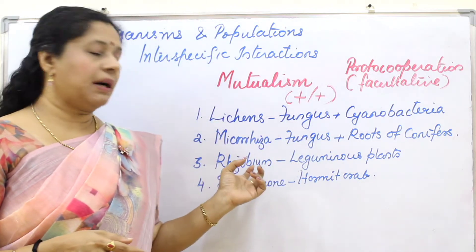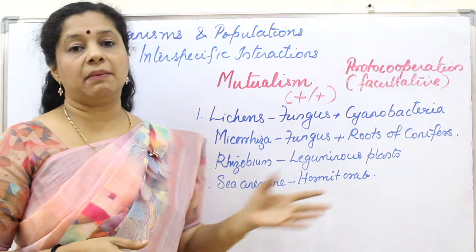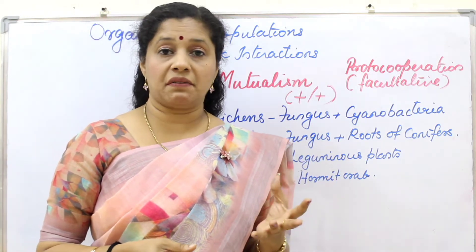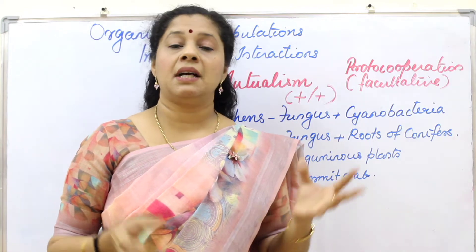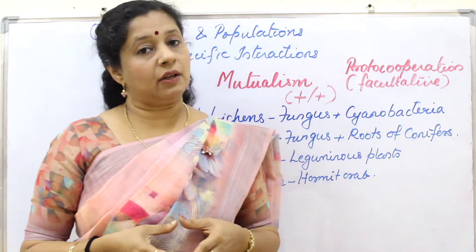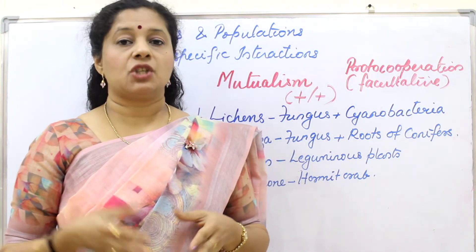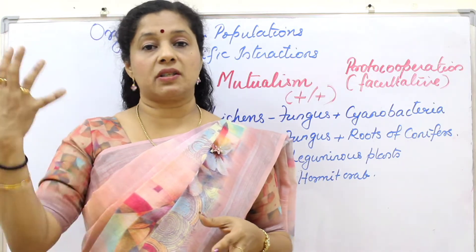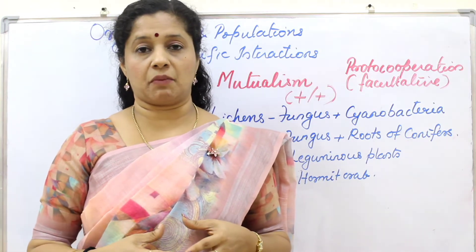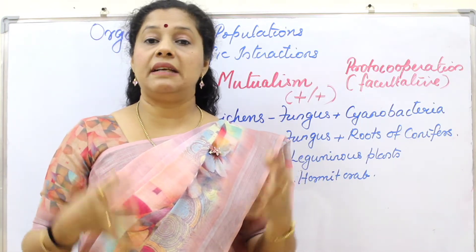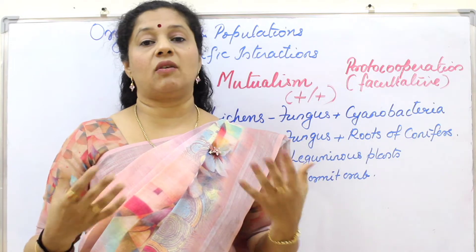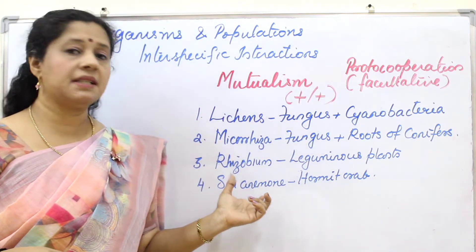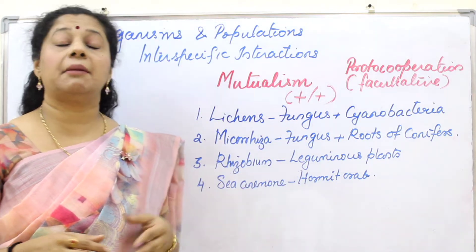Another example is Rhizobium and leguminous plants. Rhizobium is a nitrogen-fixing bacterium present in the root nodule of leguminous plants. The plants get nitrogen-enriched soil because of the fixation property, while the Rhizobium can live with the plant and also derive nutrition.